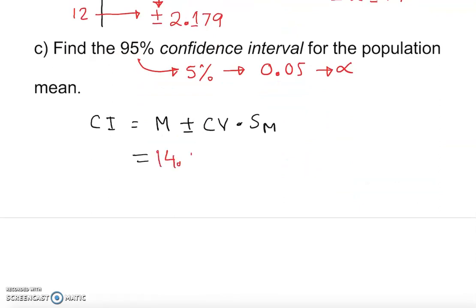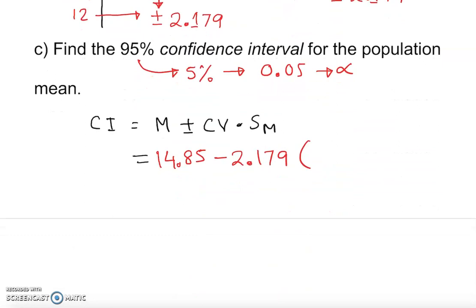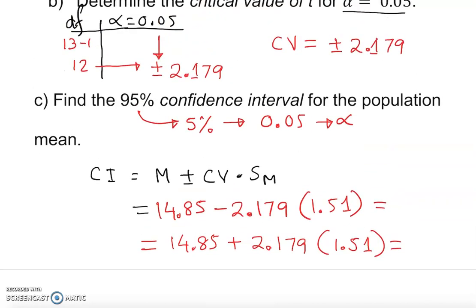14.85 minus critical value, we have 2.179, times standard error of the mean, we already found it up here, 1.51. And we need another point: 14.85 plus 2.179 times 1.51. So we're going to have two points for the interval.